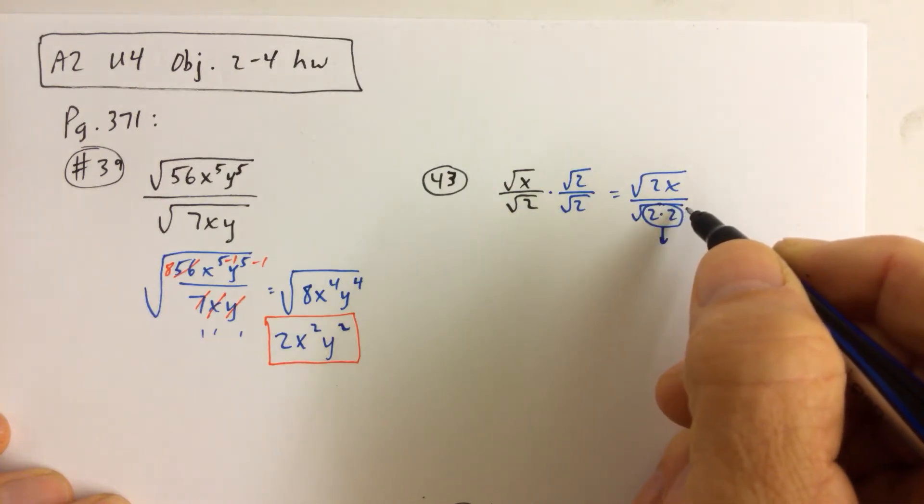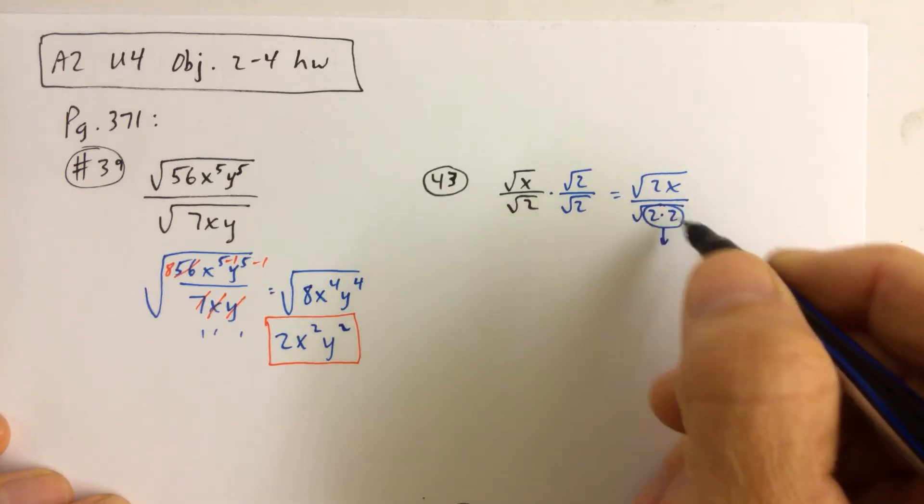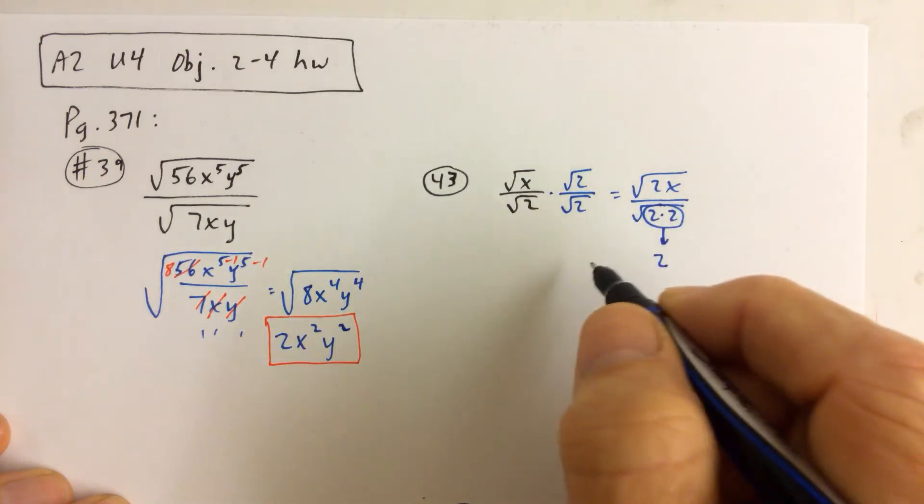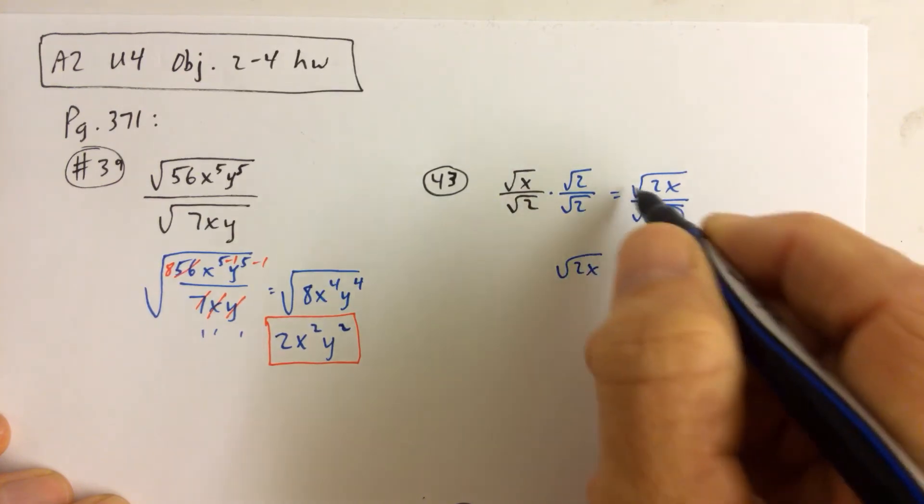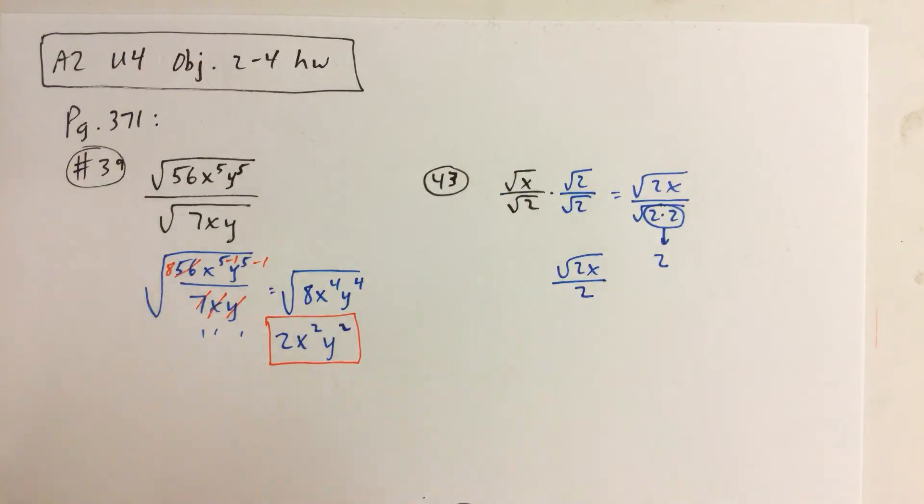because we need to pull out a group of 2, just using the same terminology that we used in sorting cards. So we're going to pull out a group of two 2s. So the square root of, basically, the square root of 4 is 2. So pull out two 2s and we get 2. So the end result is the square root of 2x in the numerator and 2 in the denominator.